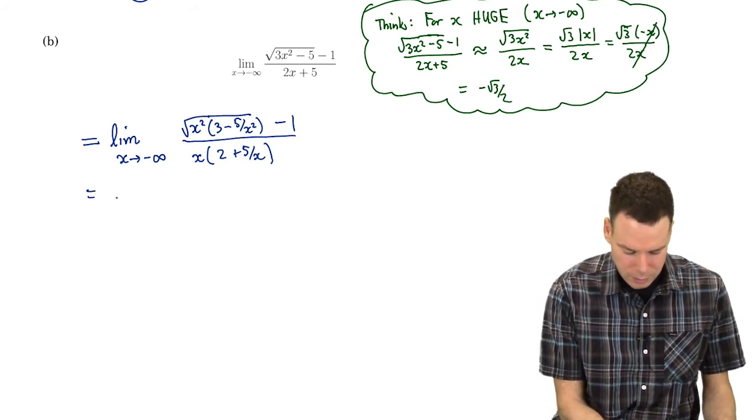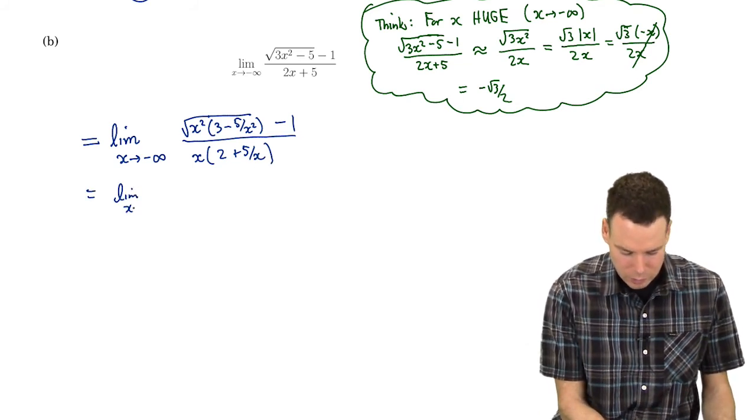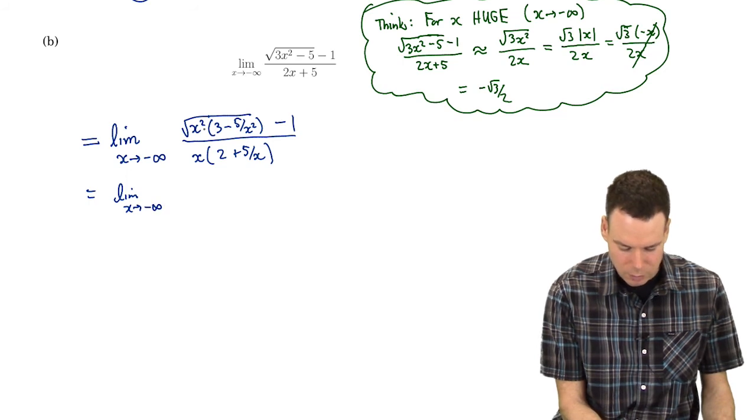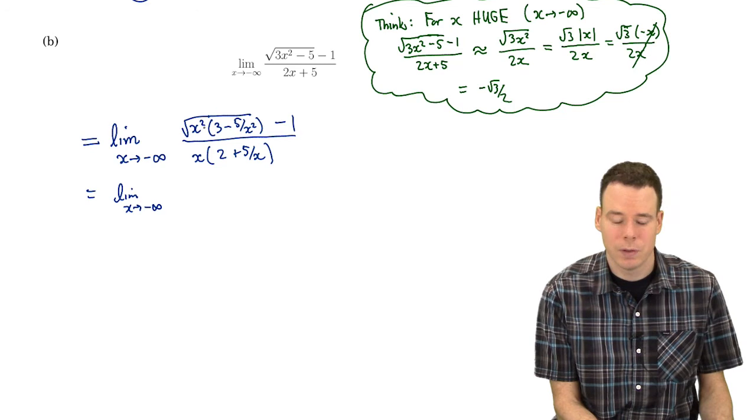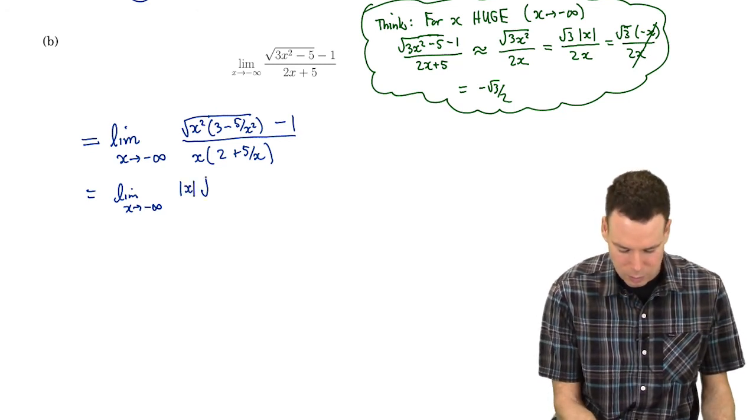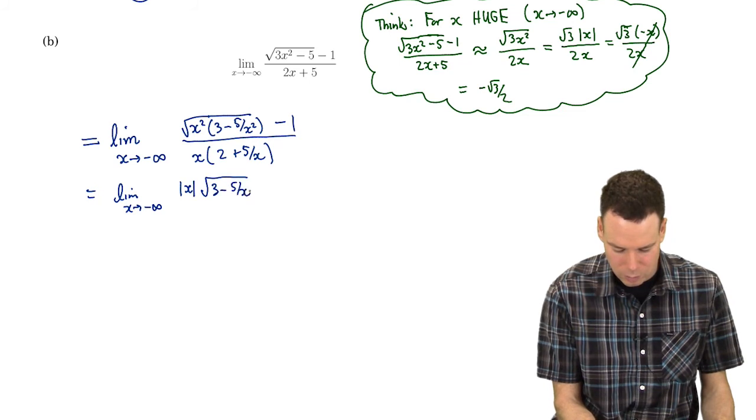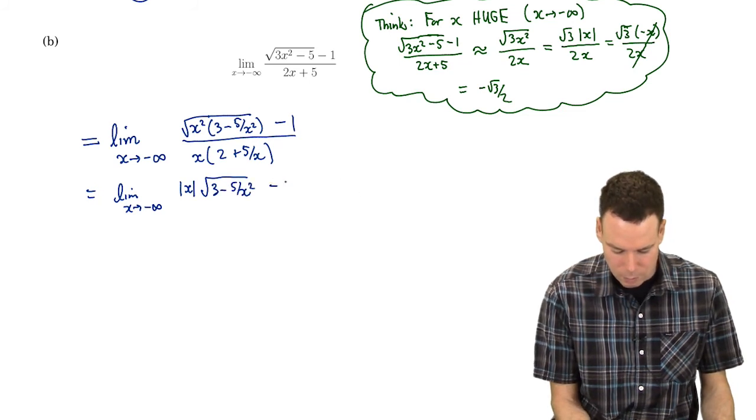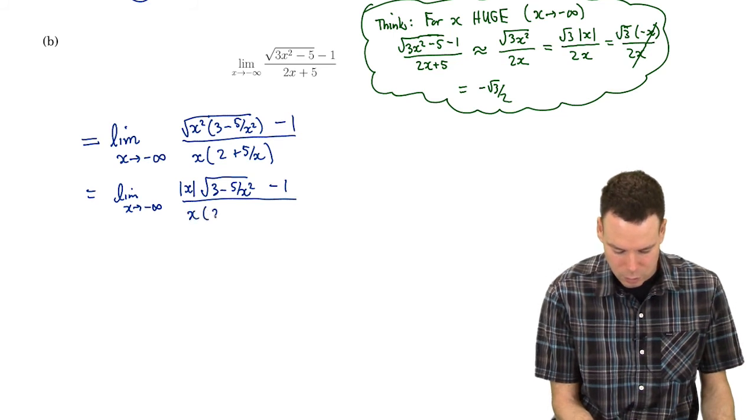So now I'm almost done with that factoring. Now I can distribute the square root sign over the x squared. So I get a square root of x squared. Square root of x squared, that's the same thing as absolute value of x. Then I've got a square root of 3 minus 5 over x squared and then I've got a minus 1 and then I've got x times 2 plus 5 over x.